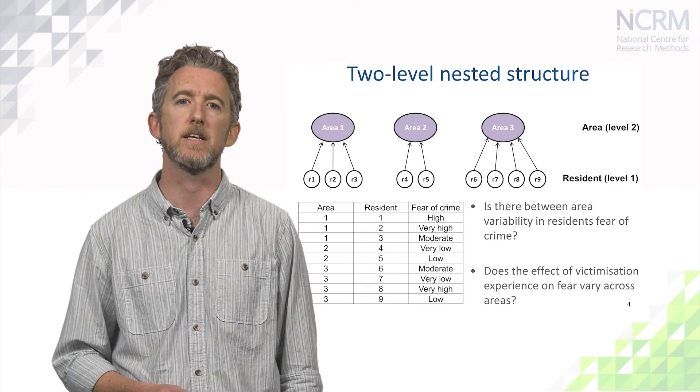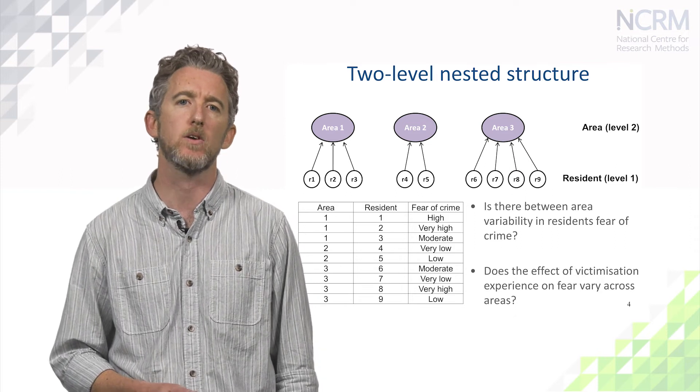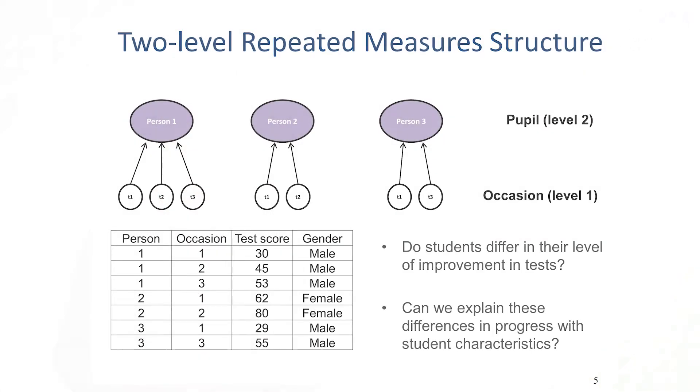Level one doesn't have to be individuals. Rather, it's the lowest level that we have data. For example, here we have a two level model where individuals are the group level, and we have repeated measurements of the same test for each respondent. So we could explore how improvement differs across students and why this is. Here note that we can include group level data here, gender, by repeating it across each measurement occasion.